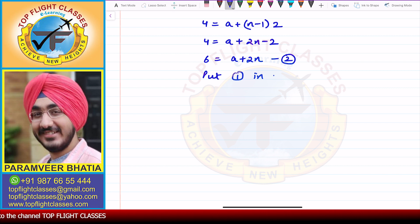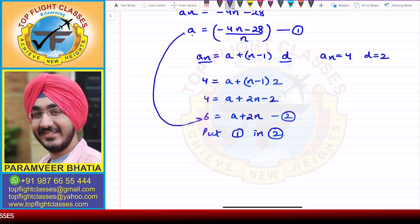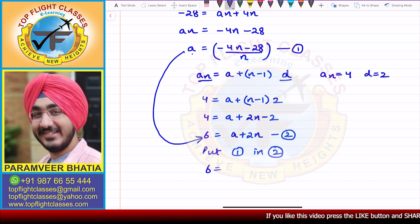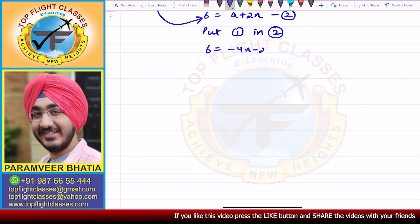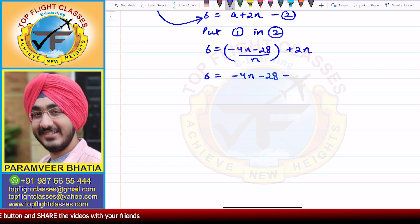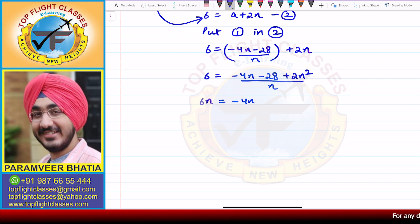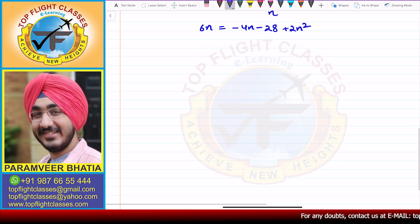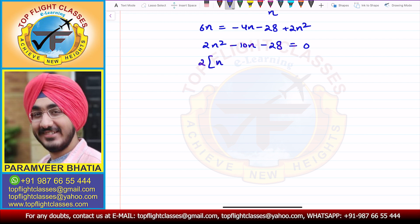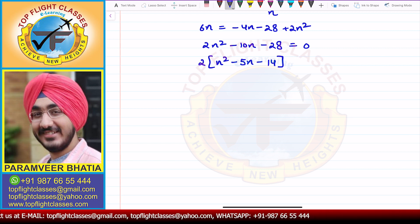I substitute equation 1 into equation 2, putting the A value. So I get 6 is equal to minus 4N minus 28 by N, plus 2N. Multiplying through, from here I get 6N is equal to minus 4N minus 28 plus 2N squared. So from here, I get 2N squared minus 10N minus 28 is equal to 0. Taking 2 common out, I get N squared minus 5N minus 14 is equal to 0.